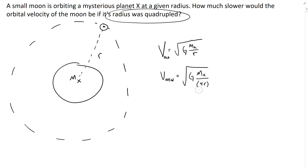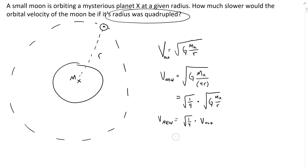We want to find the old velocity inside the new equation. Factoring out the square root of 1/4, we get: v_new = √(1/4) × √(G·m_x / r). This tells us the new velocity is √(1/4) times the old velocity. Since √(1/4) equals one-half, the new velocity is half the old velocity. So when you quadruple the radius, the orbital speed is halved. This has to do with the inverse square law — as you get further from the planet, the orbital speed decreases significantly because the force of gravity weakens as the square of the distance increases.